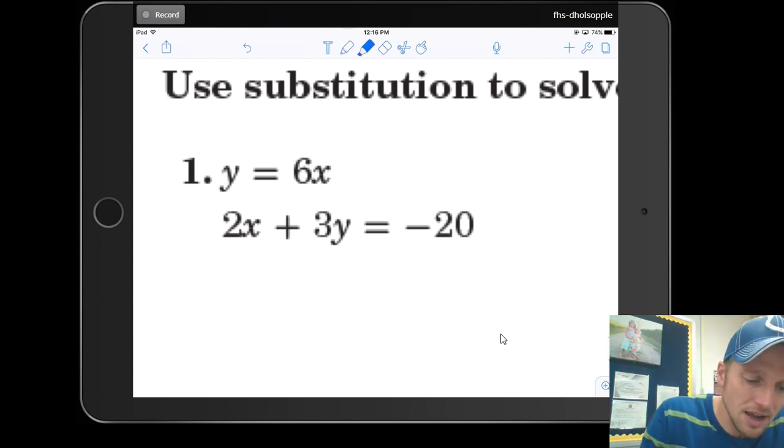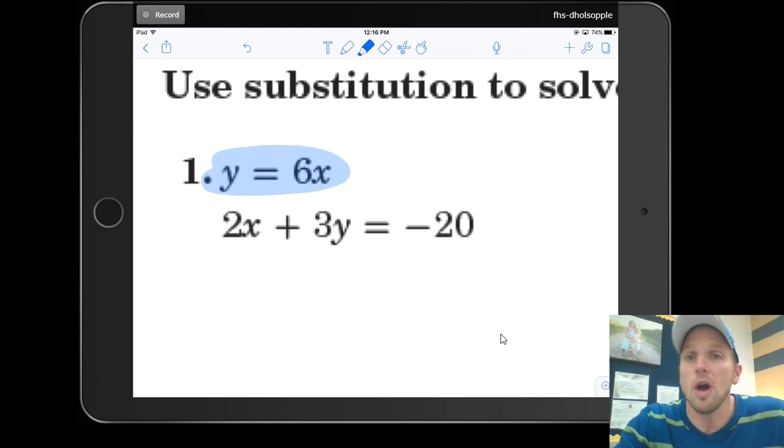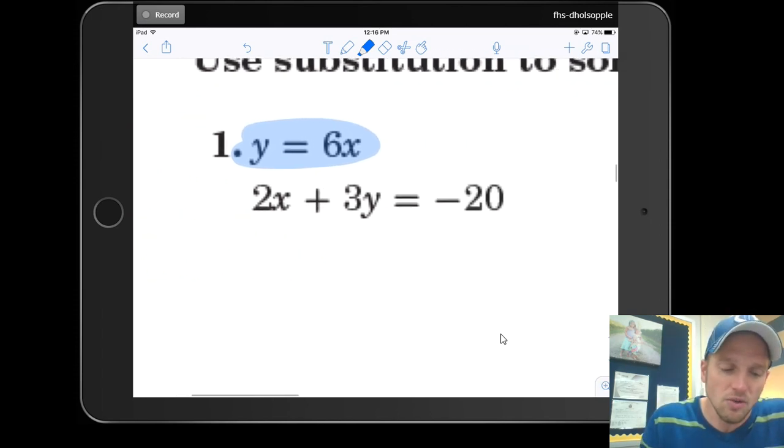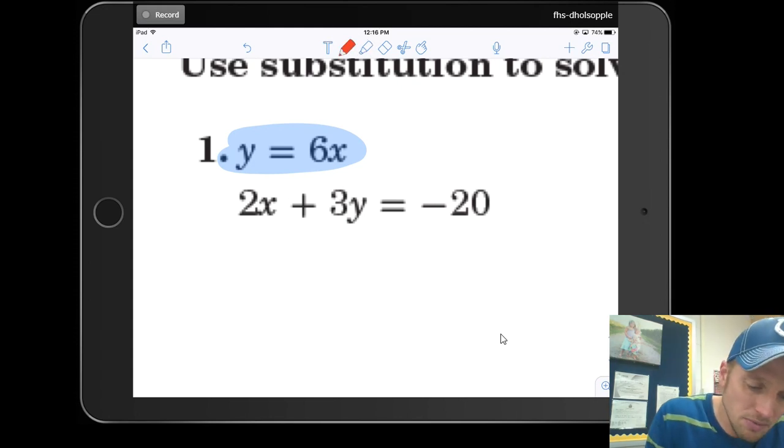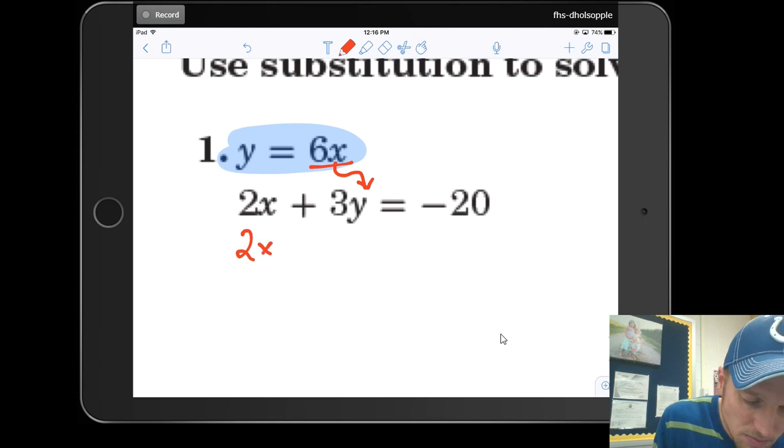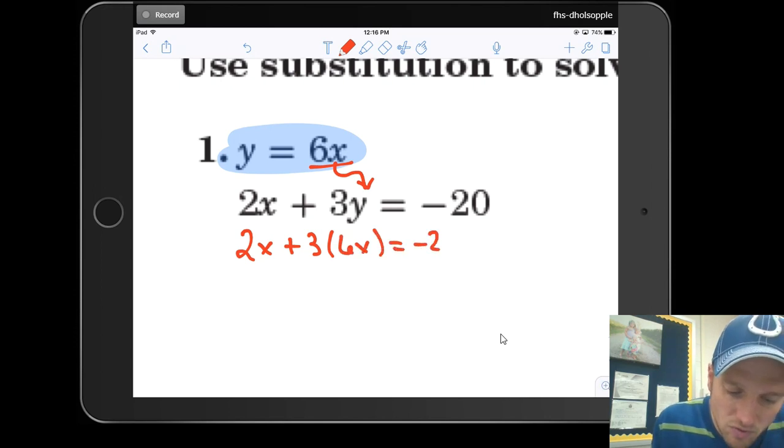Well, here's what I know. If I look at that top equation, I know that y is equal to 6x, or I could say y is the same thing as 6x. So just like when we knew that x was equal to 4, we put 4 in for x. I know that y is the same thing as 6x, so what I'm going to do is substitute 6x in for y in this second equation.